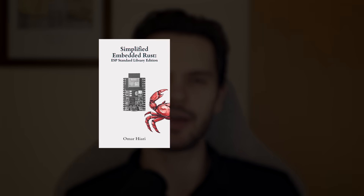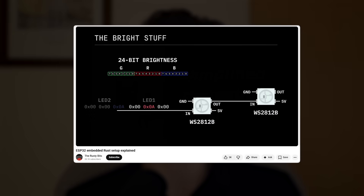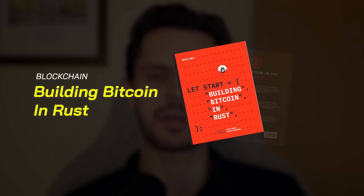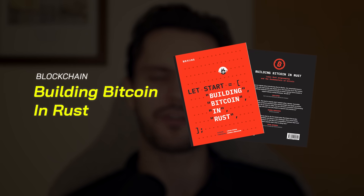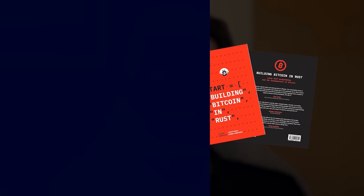The best resources for getting started with embedded Rust development that I've personally enjoyed are the Simplified Embedded Rust book and the ESP32 Embedded Rust Setup Explained video by The Rusty Bits. And if you're doing blockchain development with Rust, one of my favorite resources to get started is the Building Bitcoin in Rust book — it's free to download and teaches you the fundamentals of blockchains and Rust at the same time.